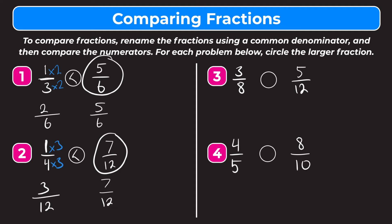So let's try number three. We have three-eighths and five-twelfths. We can see that both three-eighths and five-twelfths are less than a half, so we can't use our little shortcut. We have to find a common denominator — the common denominator between three-eighths and five-twelfths is going to be twenty-four. We multiply the three-eighths numerator and denominator by three, and we get nine over twenty-four. For five-twelfths, we have to multiply the numerator and the denominator by two, giving us ten over twenty-four. Ten is greater than nine, so ten-twenty-fourths is greater than nine-twenty-fourths, which means three-eighths is less than five-twelfths. So we circle five-twelfths.